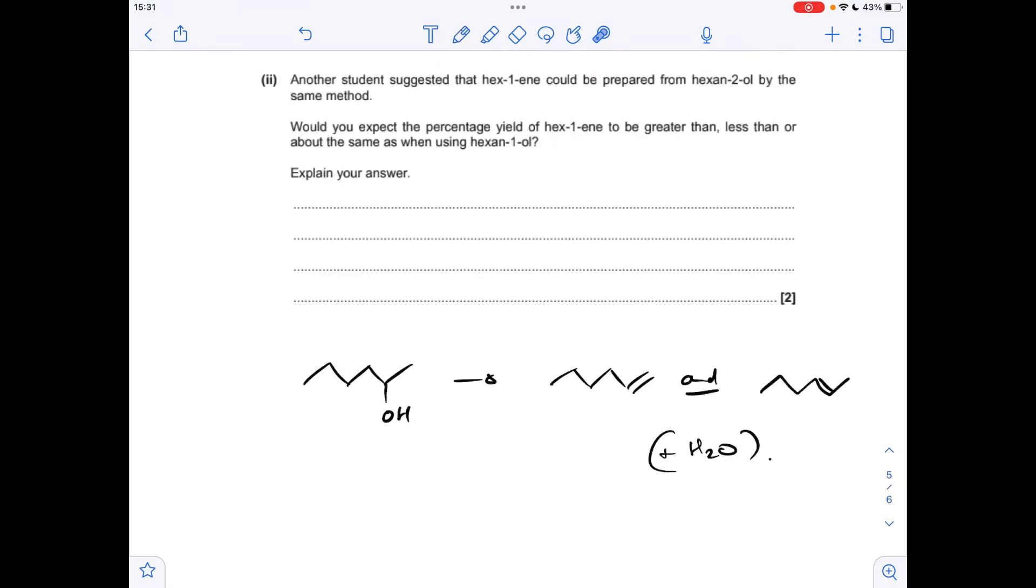The next part of the question: how would the yield of hex-1-ene compare if you try to make it from hexan-2-ol? Well, you can make hex-1-ene from this because you take the OH and one of these H's and get your double bond there. But you can also take the OH and one of these H's and that will generate hex-2-ene. So your yield's going to be lower because you make hex-1-ene and hex-2-ene.